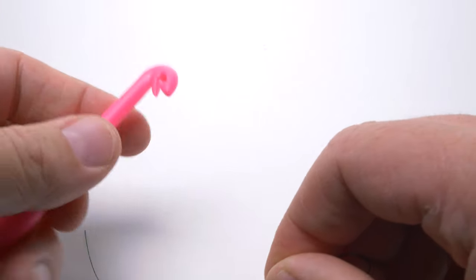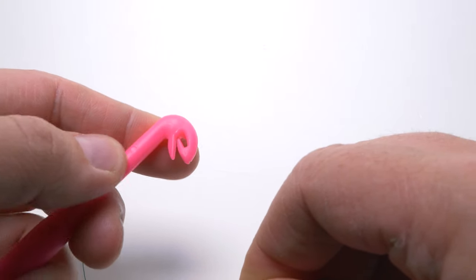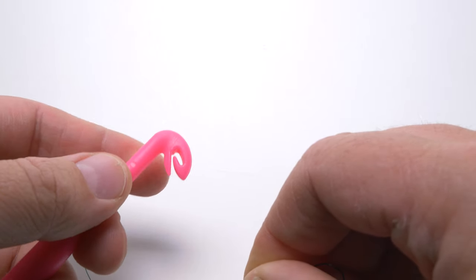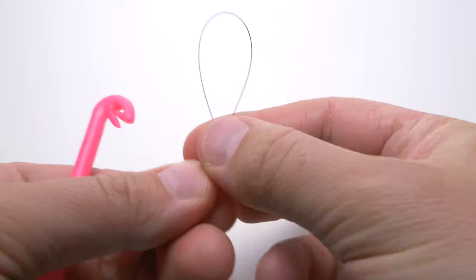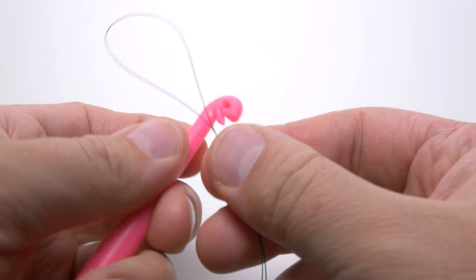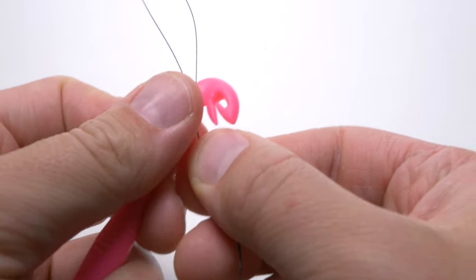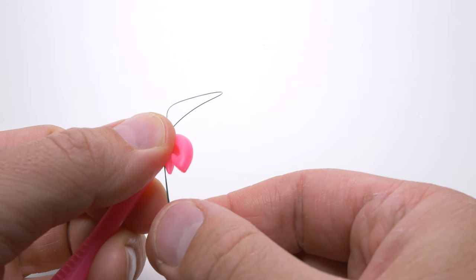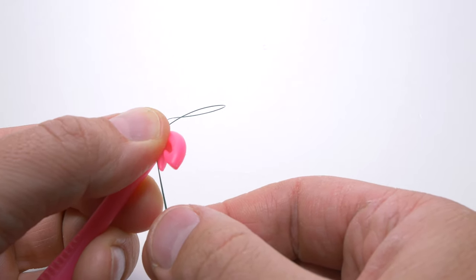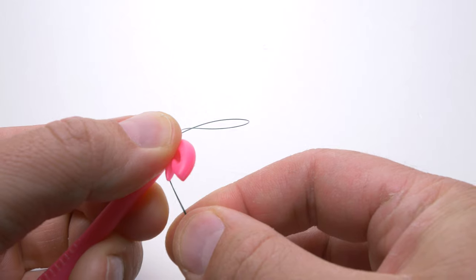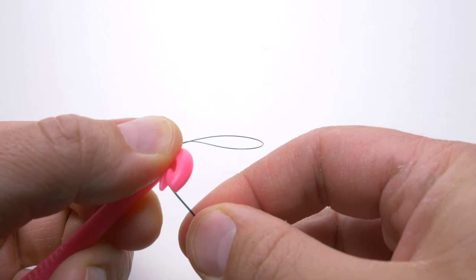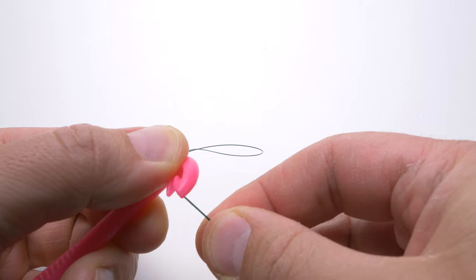Then I will align the Loop Tire tool next to the double top line and hold the line in place with my finger. Then I will bend that double top line around the tool and grab all 4 ends with my other hand.